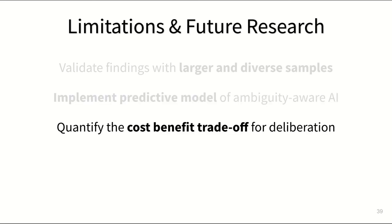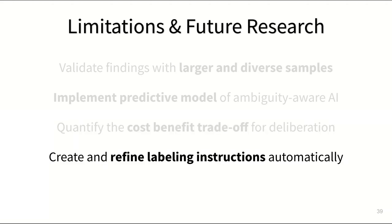Another open question that our work only scratched the surface of is under what circumstances can we justify the additional cost of performing deliberation to collect ambiguity data. In the case studies that we conducted, we observed that vague labeling guidelines are a common source of disagreement and ambiguity. And I believe there could be value in trying to extract information from deliberation data to automatically suggest which of these guideline instructions need to be refined or whether new ones should be added altogether.